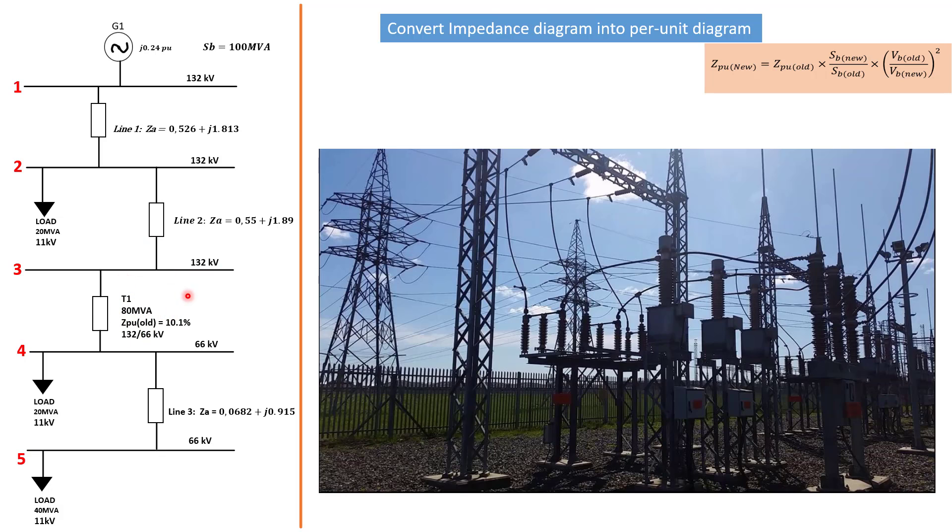Then there is a transformer here that is transforming from the higher potential to a lower potential, from 132 kilovolt to 66 kilovolt. We have a third line going into this load. On bus bar 4, we still have another load and on bus bar 2, we have another load. We will be talking about loads in the coming tutorial.